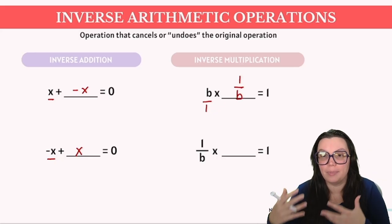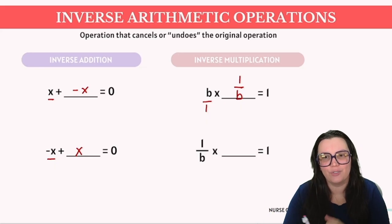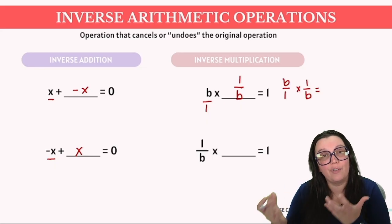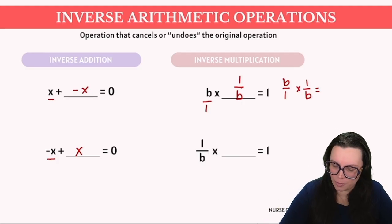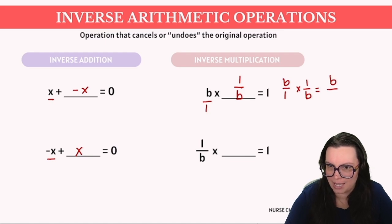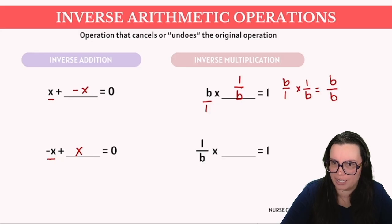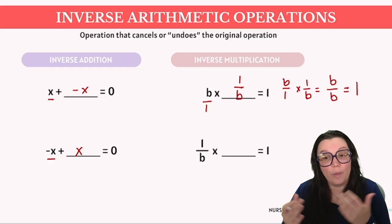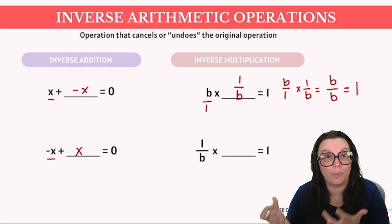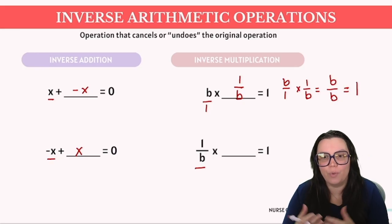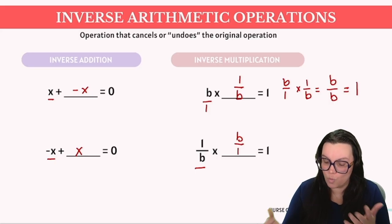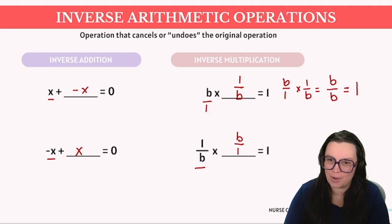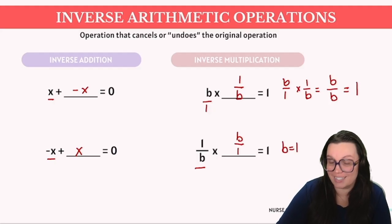To verify this, let's multiply B in its fractional form as B over one by its reciprocal one over B. When multiplying fractions, we multiply the numerators together and the denominators together. B times one gives us B, and one times B also gives us B. This gives us B over B, which further simplifies into the number one. We may also encounter a fraction of one over B — to identify its reciprocal, we simply flip the fraction, resulting in B over one. When we multiply numerators and denominators together, we again simplify to one.